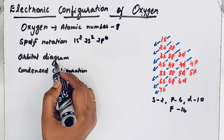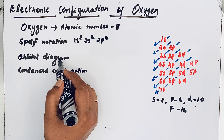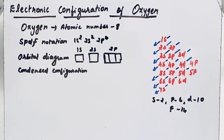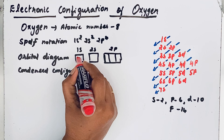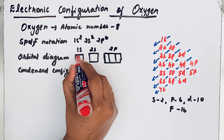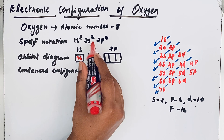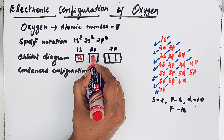In the orbital diagram, orbitals are represented in the form of boxes. We have boxes for 1s, 2s, and 2p. In the 1s orbital we place two electrons — one with positive spin and one with negative spin. For the 2s orbital also we have two electrons, positive spin and negative spin. In the 2p orbitals we have only four electrons, filling first with positive spin then negative spin. So we have eight electrons total.